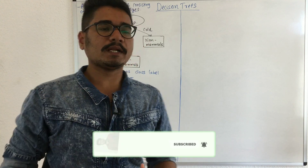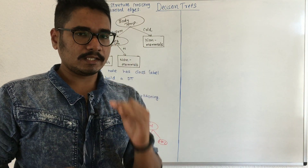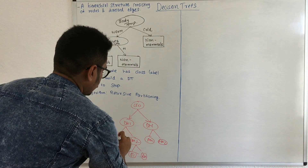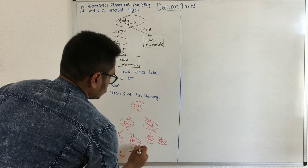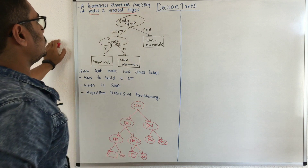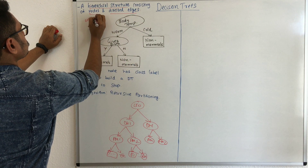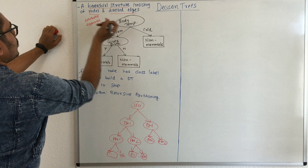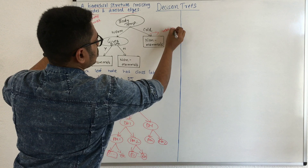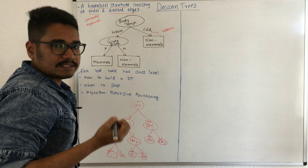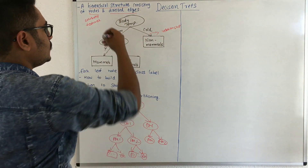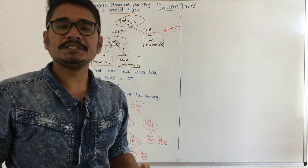A decision tree essentially does a similar thing — it represents data in a tree-like hierarchical structure consisting of n number of nodes, called attributes, and directed edges that establish relationships between entities. The purpose of these directed edges is to emphasize feature relationships and feature importance. Without directed edges it would be very difficult to understand the relationship between different attributes.